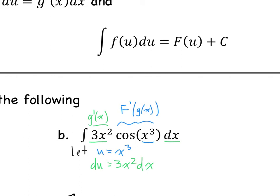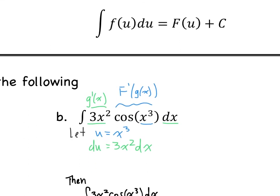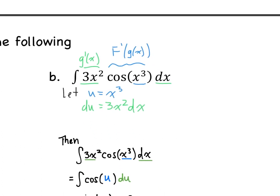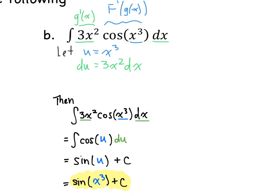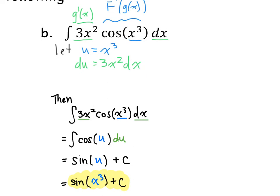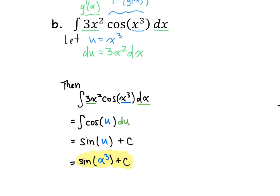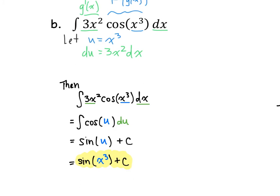So if we were to continue on, we go ahead and make our substitution. We have the integral of 3x squared times the cosine of x cubed dx. Substituting in, we now have the cosine of u, and 3x squared dx is our du. We can integrate the cosine of u — that's simply the sine of u. And the last thing we do is substitute back to get our final answer of sine of x cubed plus c.